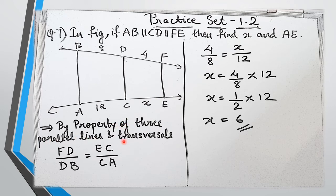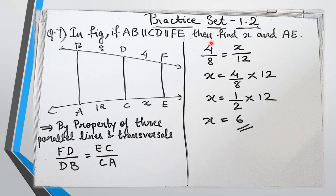By the property of three parallel lines and two transversals, the intercepts made by the transversals are in the same proportion. So FD upon DB equals EC upon CA. Substituting: FD is 4, DB is 8, EC is X, and CA is 12. Multiplying 12 to the other side: X equals 4 by 8 into 12. Since 4 by 8 simplifies to 1 by 2, X equals 1 by 2 into 12, which gives X equals 6. So the length of CE is 6.